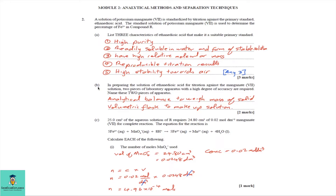Part B: In preparing the solution of ethane dioic acid for titration against the manganate 7 solution, two pieces of laboratory apparatus with a high degree of accuracy are required. These two pieces are the analytical balance, which is used to weigh the mass of solid, and the volumetric flask, which is used to make up the solution. Note that ethane dioic acid is the same thing as oxalic acid, H₂C₂O₄.